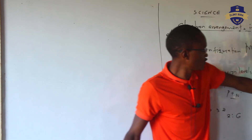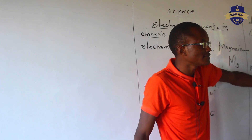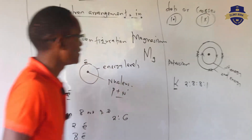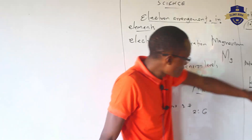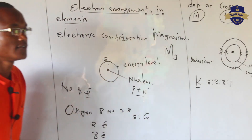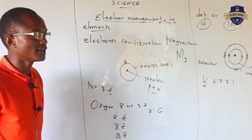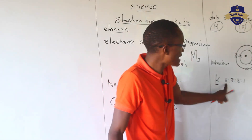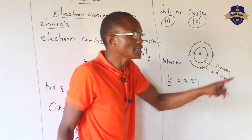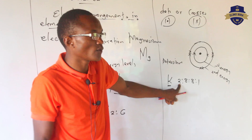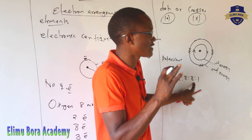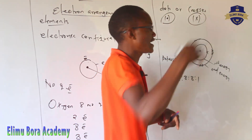So 2:8 is 10, plus 8 is 18, plus 1 is 19 — that checks out. From this ratio, how many energy levels must we have? There are four. So we have the first, second, third, and fourth energy levels. The first energy level is filled with a maximum of two, followed by the second with eight, followed by the third with eight, and the remaining one is transferred to the fourth energy level.